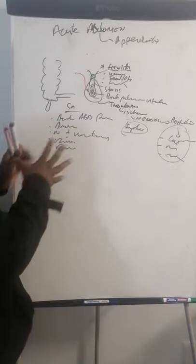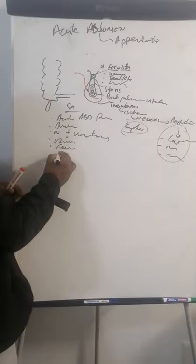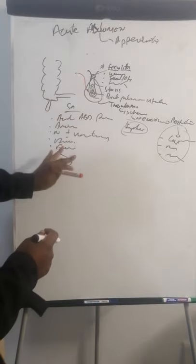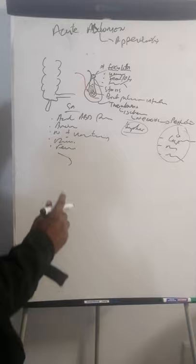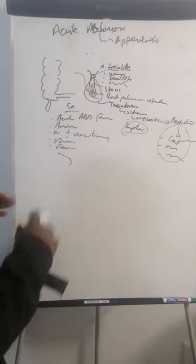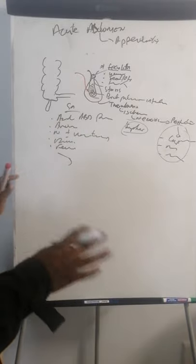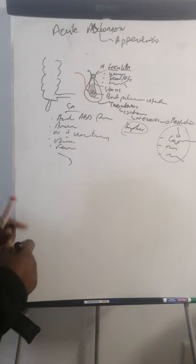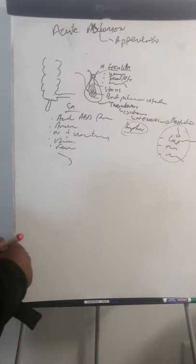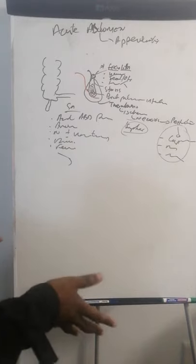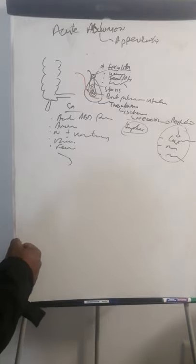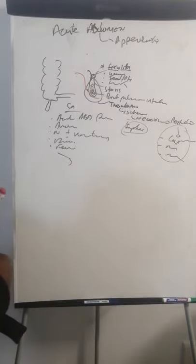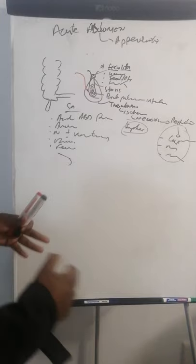Once the patient comes in with this history, check vital signs first to determine whether they have perforated — a perforated patient may be in septic shock with high temperature and tachycardia. This is when appendicitis can kill: once it ruptures and the patient is delayed going to theater.